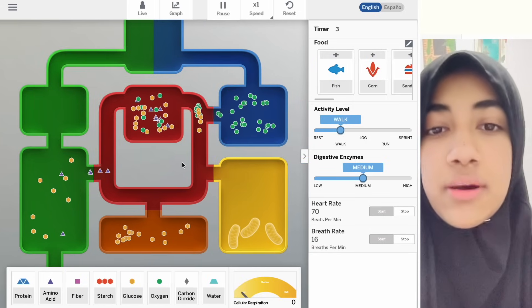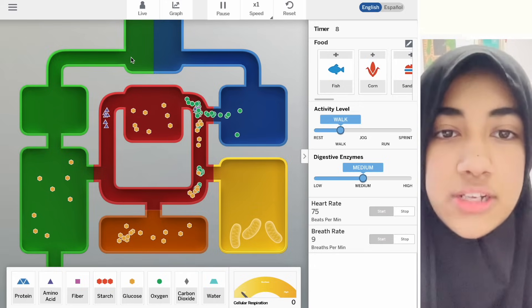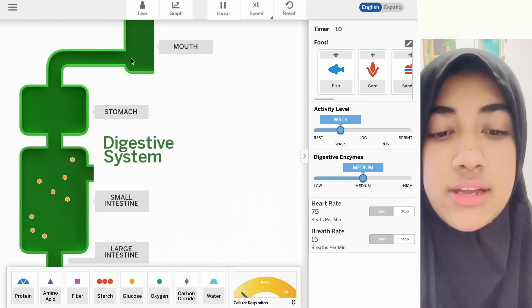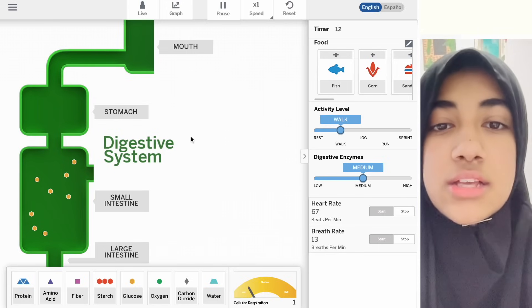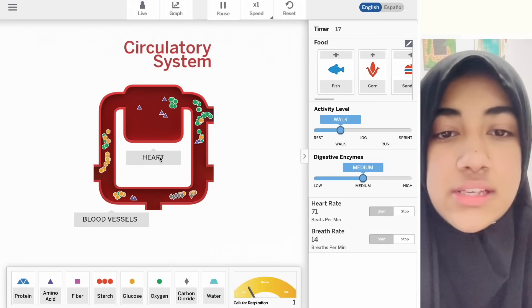This is all color coded. When we click on this green part, this is our digestive system. This is our circulatory system, this is our heart and blood vessels.